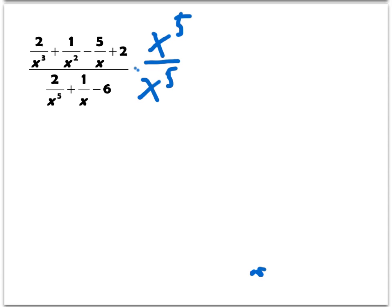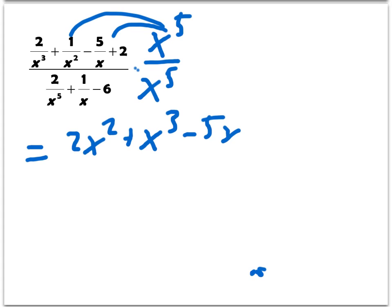Now I'm going to distribute. When I do that, I take x to the fifth and divide it by x cubed, which gives 2x squared. Then distributing there we get x cubed. Distributing there we'll get minus 5x to the fourth, and then distributing there we get plus 2x to the fifth.